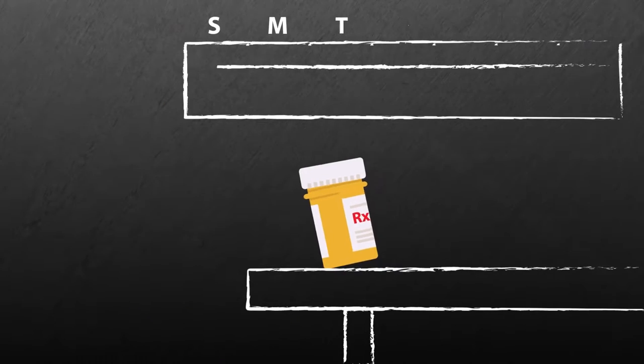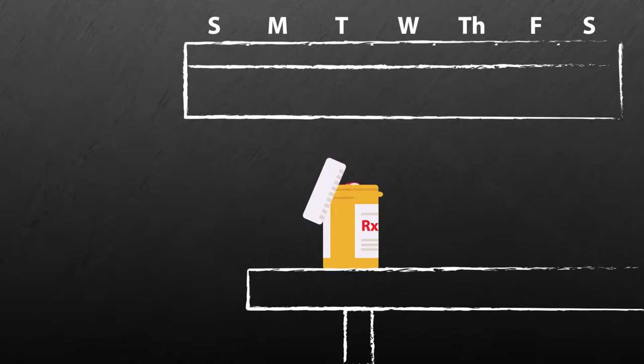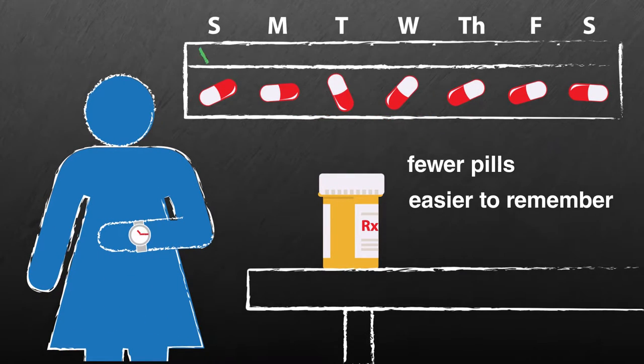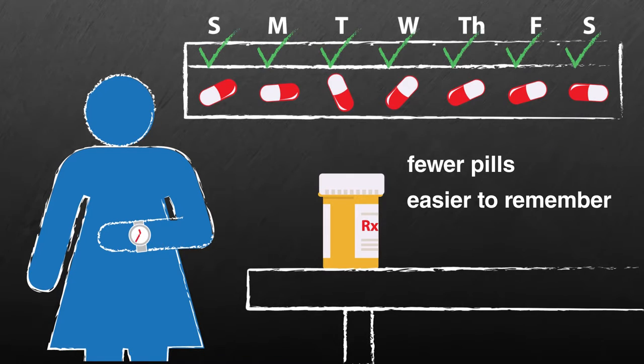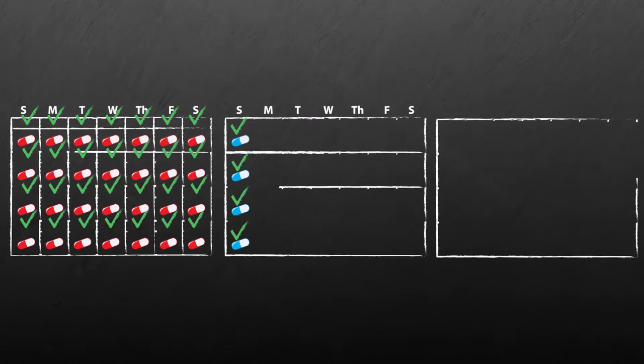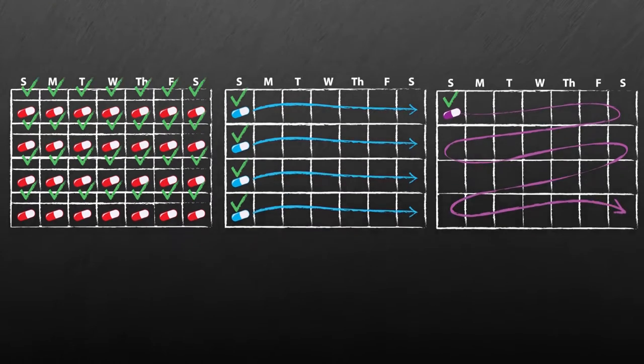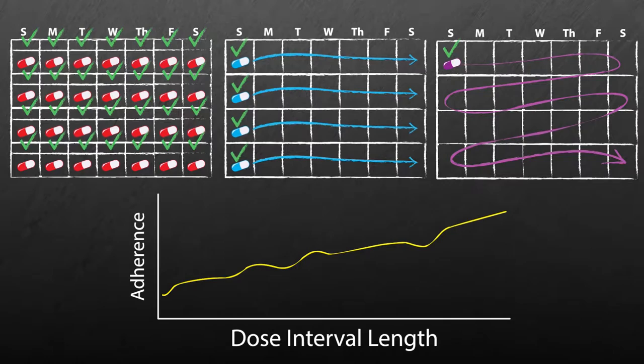One factor that can have a significant positive impact on medication adherence is convenience. People adhere better if they're able to take medication less frequently, such as taking a pill once a day instead of every six hours. Several studies have examined the effect of weekly or monthly dosing compared to daily. Lengthening the interval has been shown to increase adherence rates.